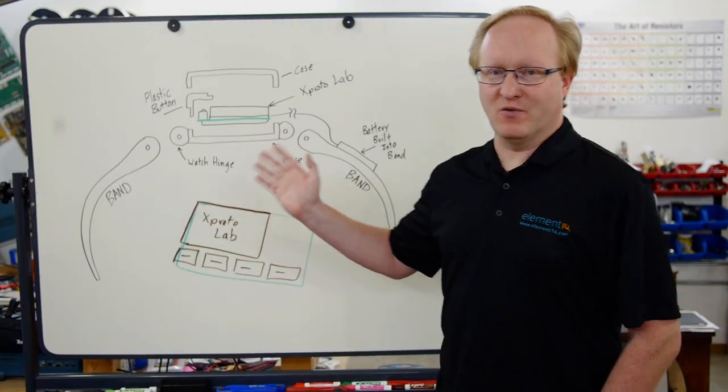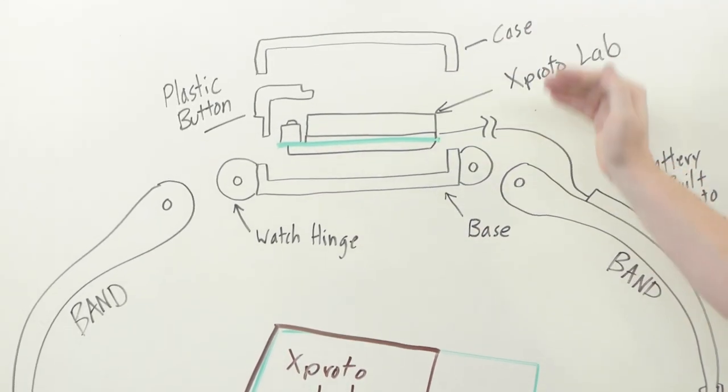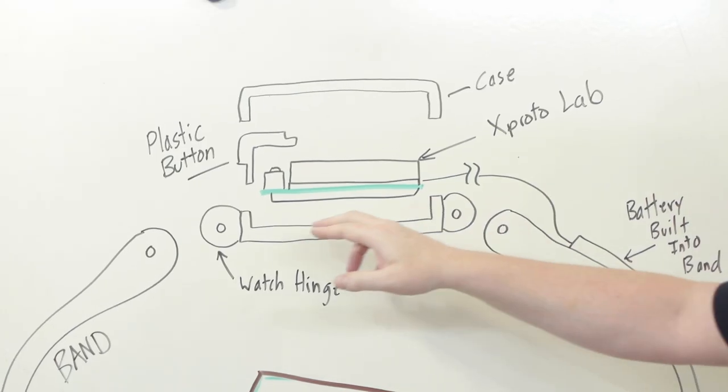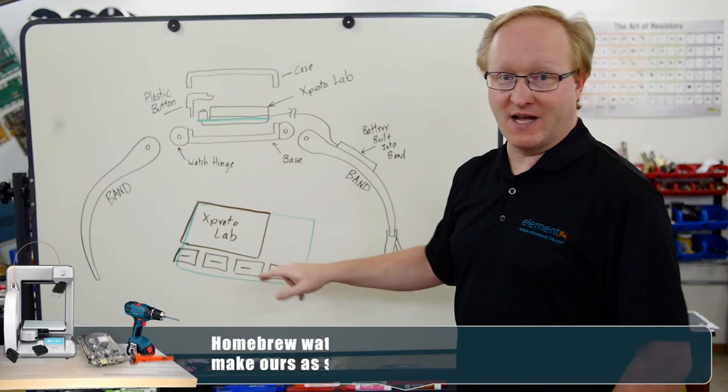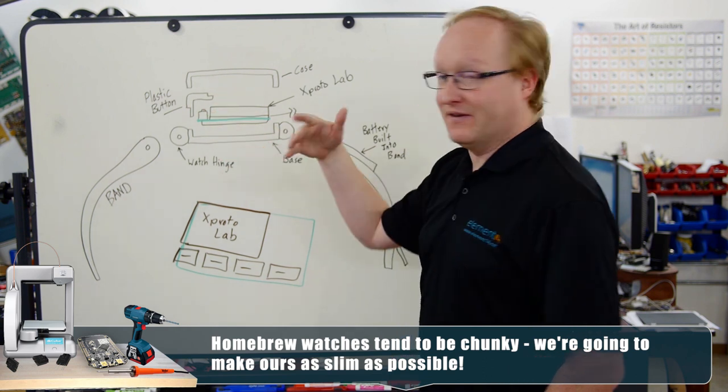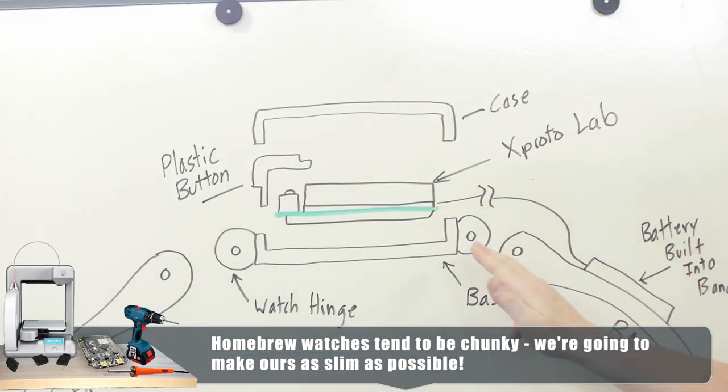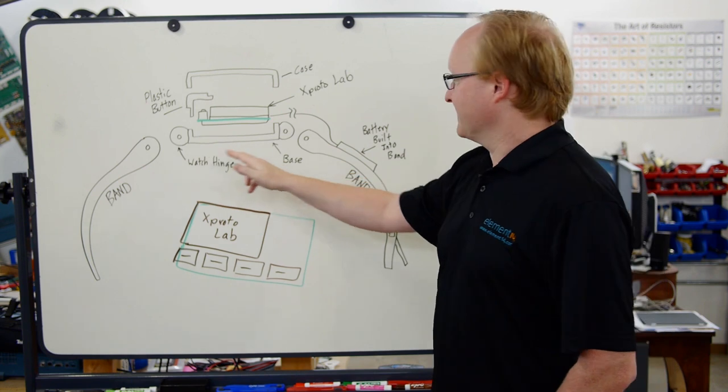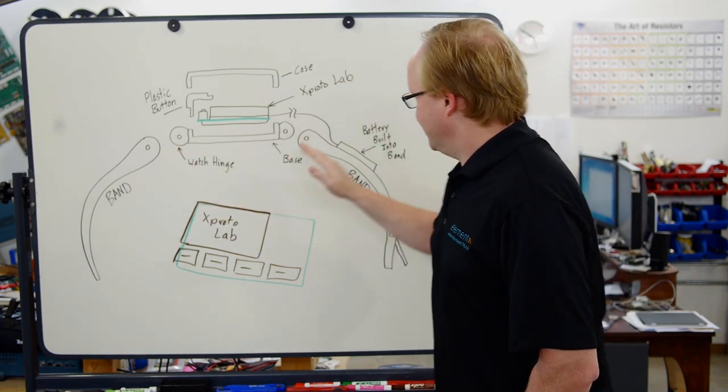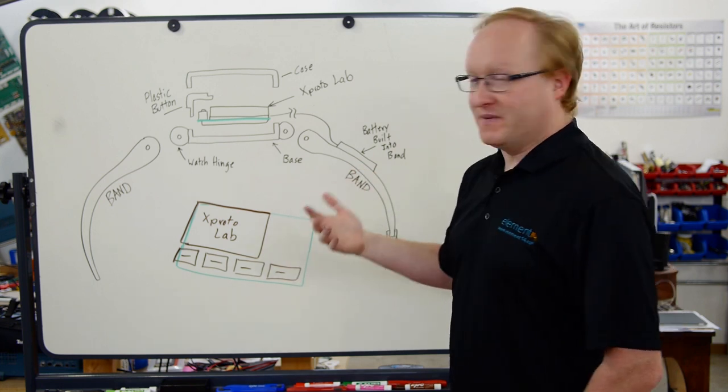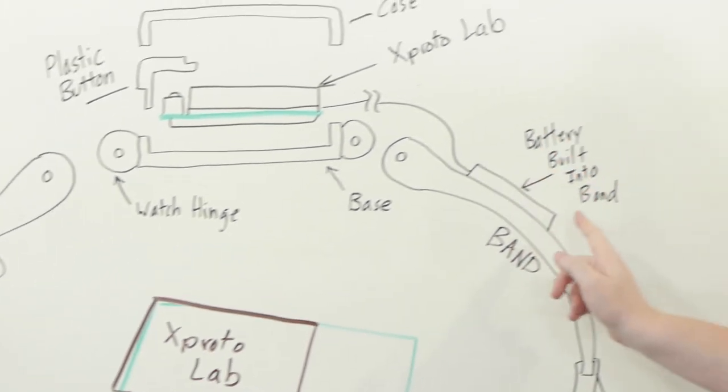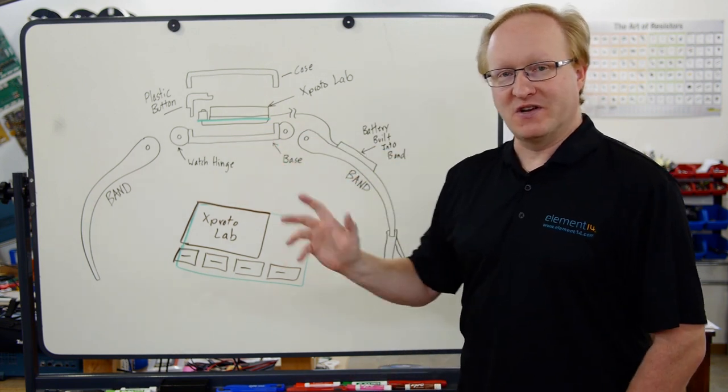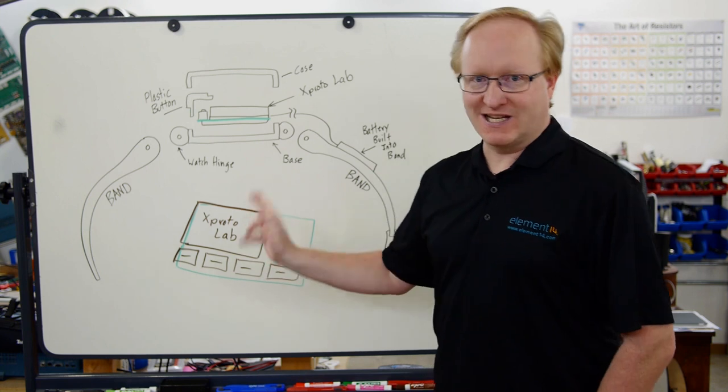This is my assembly plan for the watch. I want to take the X-Protolab and encase it in the center. Using the Formlabs SLA printer, we'll make a high detail case to enclose it. There'll be some plastic buttons here that will actuate the four buttons on the X-Protolab. Those will nestle into the front of the case, which will have an opening for the screen. That will click down over into the base of the case, which will have watch hinge posts in it. I also want to build the battery into the band so the thickness is spread out instead of piling everything up on the watch itself.